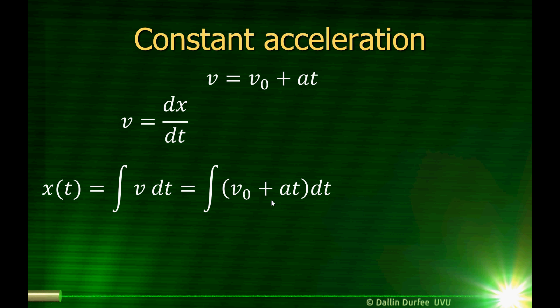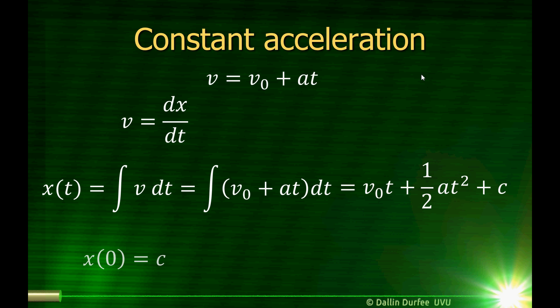If the acceleration is constant, then x is just the integral of v-naught plus at with respect to time. The integral of v-naught is just v-naught t, and the integral of a times t is one-half at squared, and then because this is an indefinite integral, we get a constant. At time t equals zero, v-naught t and one-half at squared both go to zero, so x at time t equals zero is just that integration constant, which must be x-naught. So the position as a function of time is x-naught plus v-naught t plus one-half at squared.